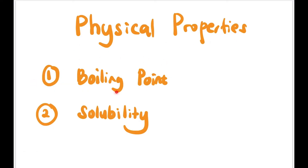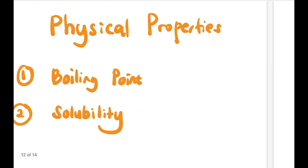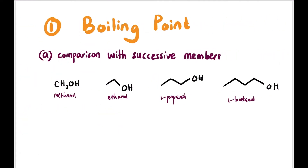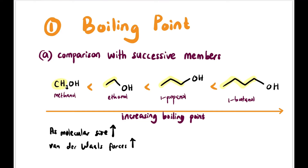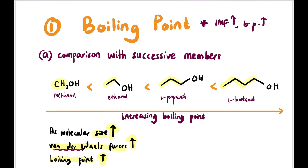Now let's talk about the physical properties of alcohol: boiling point and solubility in water. Comparing successive members — methanol, ethanol, 1-propanol, 1-butanol — boiling point increases from left to right. All have the same OH group, so what differs is molecular size. As molecular size increases, van der Waals forces become stronger, hence higher boiling point. The key principle: stronger IMF means higher boiling point.